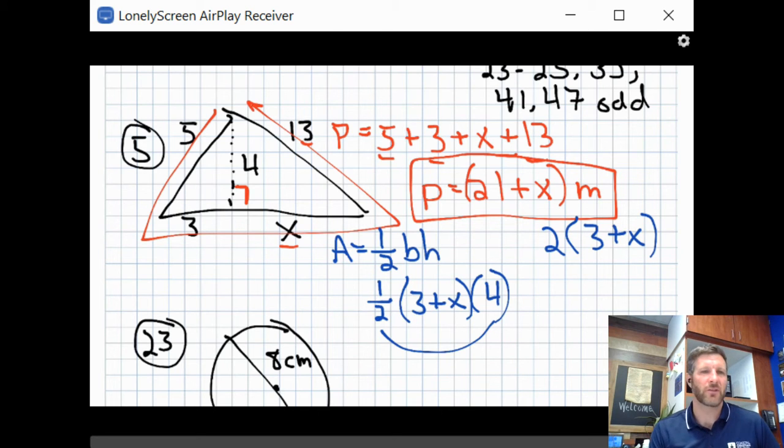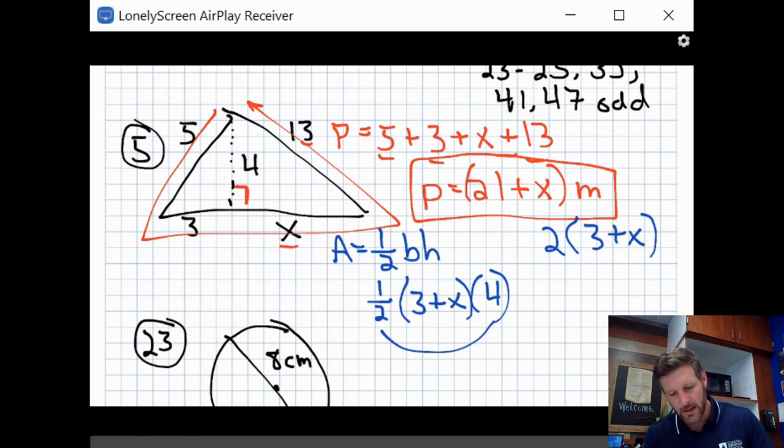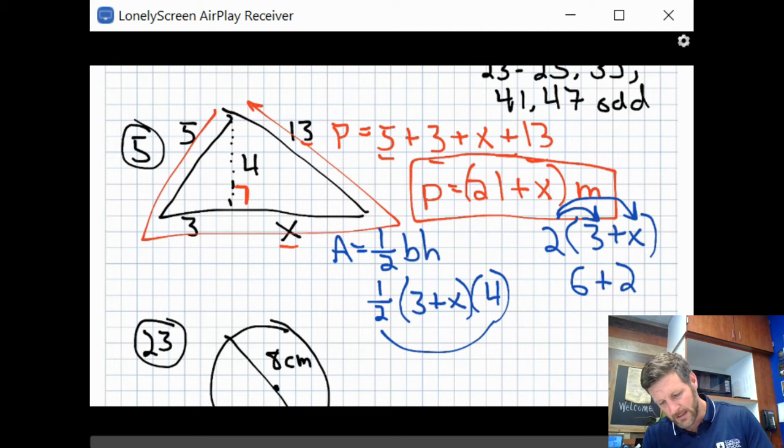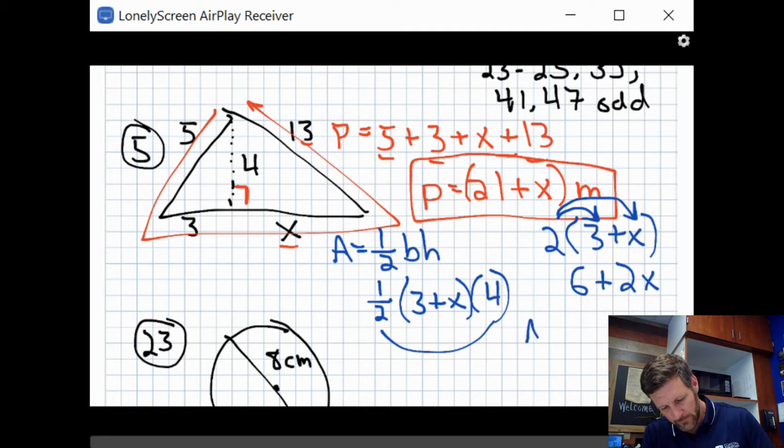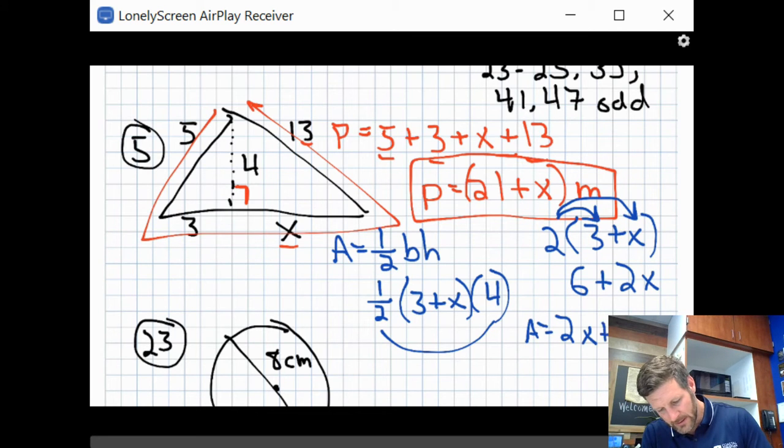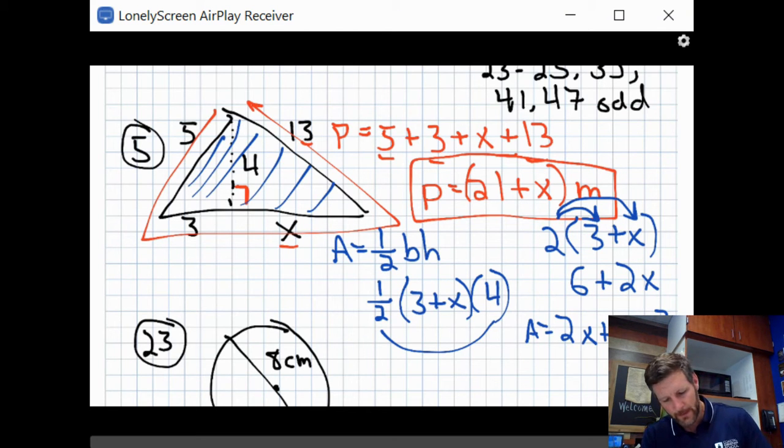I could distribute the half and do a half times three, a half times X, but you're going to get your life way too complicated doing it that way. So I would first look at just, because the order of multiplication doesn't matter, I'm just going to do one half times four and cut four in half. And you can see that that's two. So one half times four gives me two times three plus X. Okay. So now once you do that, the fraction's gone, stress is alleviated. And so now I have two times this quantity, three plus X.